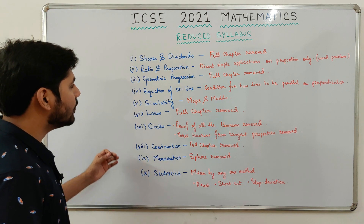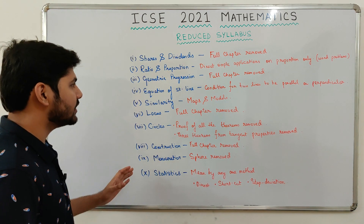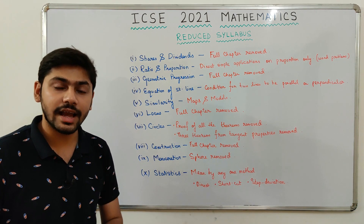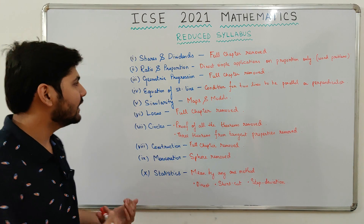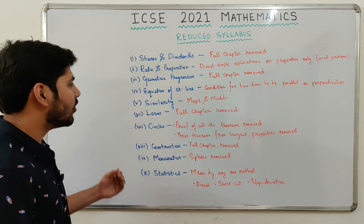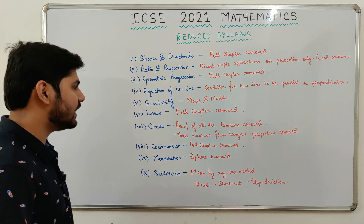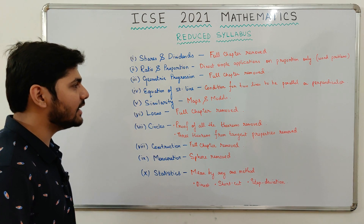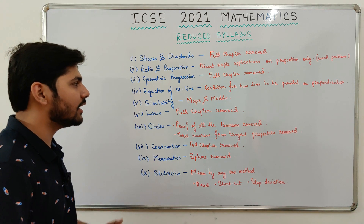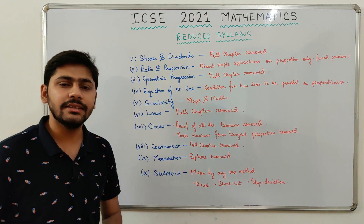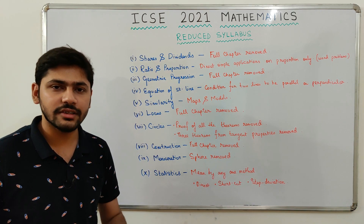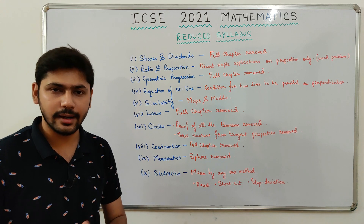Next, Geometric Progression — the entire section of Geometric Progression has been removed. Next, Equation of a Straight Line. From this chapter, the condition for two lines to be parallel or perpendicular has been removed, meaning two formulas have been taken out.